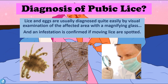The diagnosis of pubic lice: lice and lice eggs are usually diagnosed quite easily by visual examination of the affected area with a magnifying glass, and an infestation is usually confirmed if moving lice are spotted. In some cases diagnosis can be made with the naked eye, while a magnifying glass makes things easier.